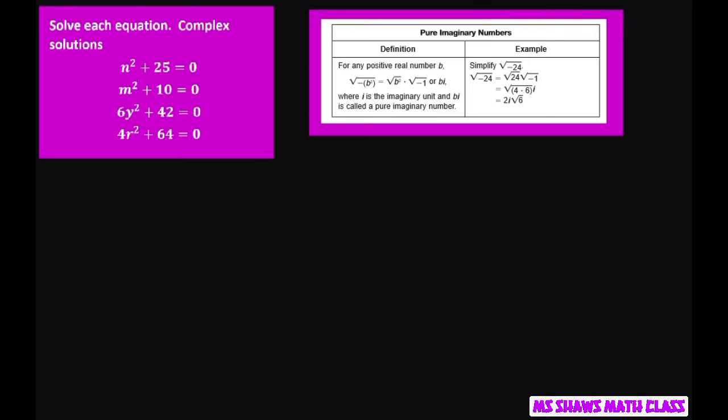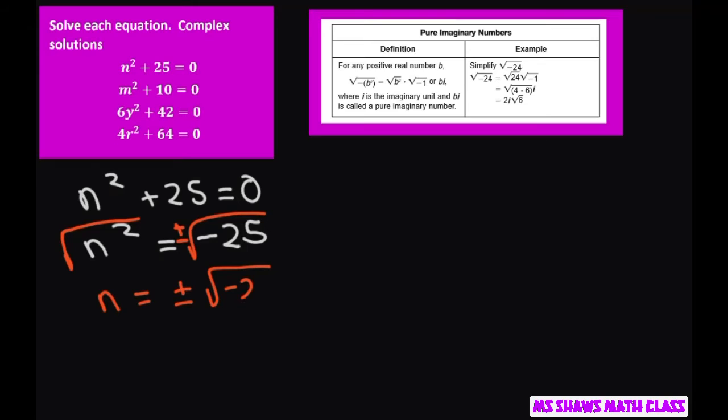We'll get started with the first one. We're going to take n squared plus 25 equals 0. You subtract 25 from both sides to get n squared equals negative 25. When you square root both sides, you always put plus and minus here. So you get n equals plus minus square root of negative 25.